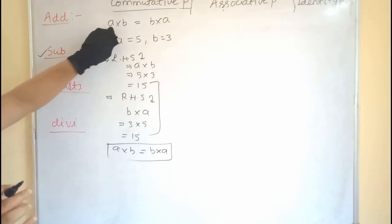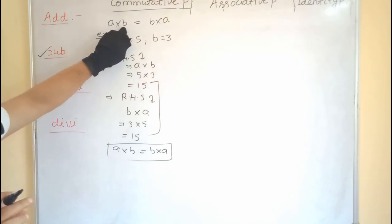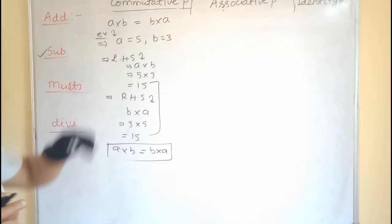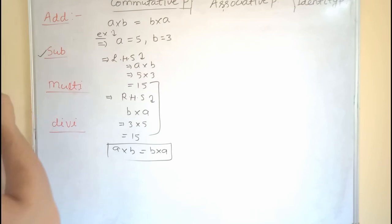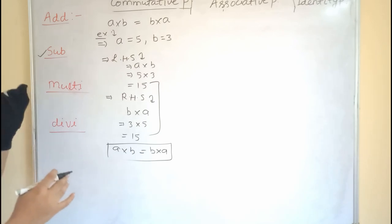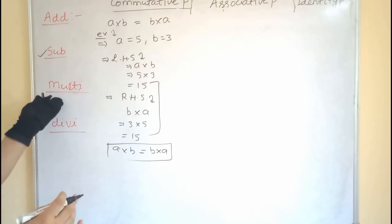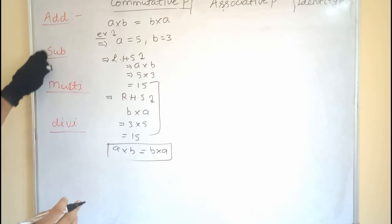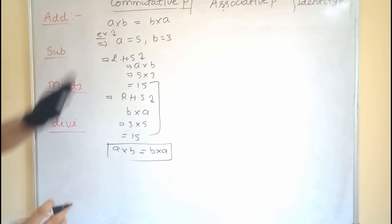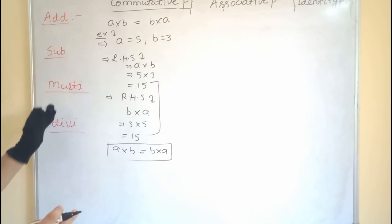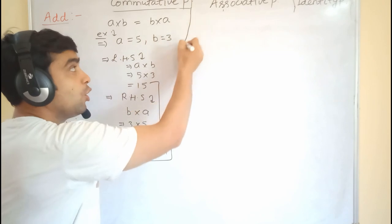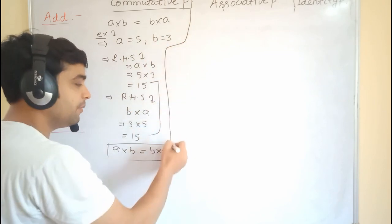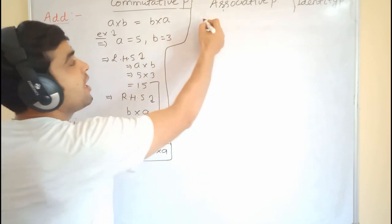This means multiplication is following commutative property. If we change the sequence of numbers, they will always be equal. Now we are going to check the associative property for multiplication.